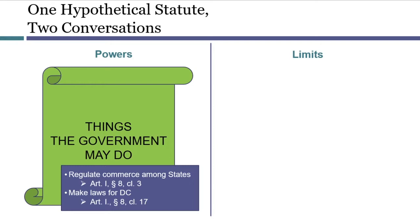What I've just talked through is the kind of conversation that lawyers and judges might have regarding powers. If Congress passed a law requiring all adults to wear polka dotted shirts on Wednesdays, we could see that that wouldn't really be authorized by either of the powers we're talking about.